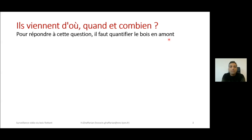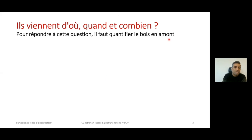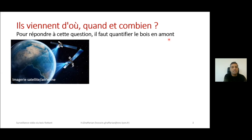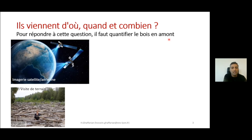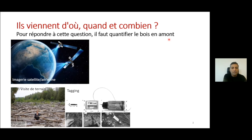As other colleagues have mentioned, wood can be a source of danger. Our questions are: where does it come from, how much wood arrives, and when does it come to the river? To answer these questions, we have different techniques — for example, satellite imagery, site investigation, different tagging methods like GPS or RFID, and video monitoring.